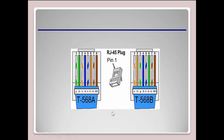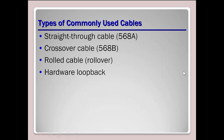568A and 568B are used differently — we'll talk about straight through versus crossover. Looking at the connector with the tab on the bottom, the pin at the left is pin 1. The wiring order to remember is: white-orange, orange, white-green, blue, white-blue, green, white-brown, brown — that's the one from Cisco training.